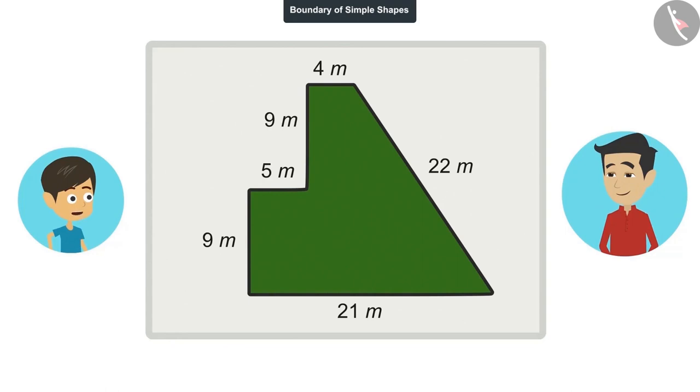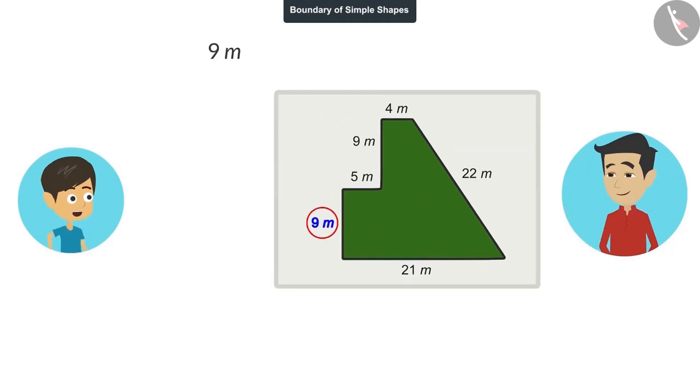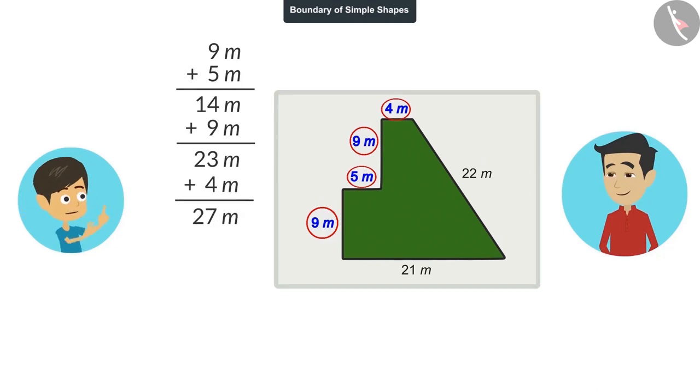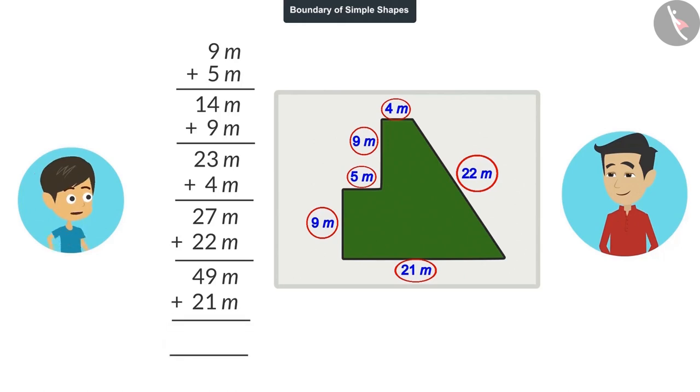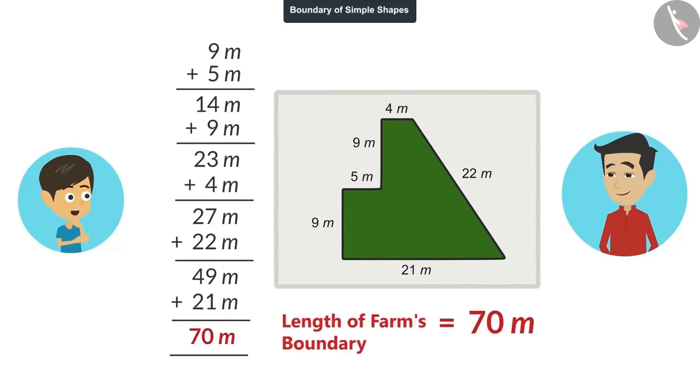Okay, this farm has 6 sides. By adding all these, I can find the length of the field's boundary. Yes, tell me, what will be the length of the boundary? 9 meters added to 5 meters is 14 meters. 14 meters added to 9 meters is 23 meters. 4 meters added to 23 meters is 27 meters. 27 meters added to 22 meters will be 49 meters. If we add 21 meters to 49, the answer will be 70 meters. That means the length of our farm's boundary is 70 meters.